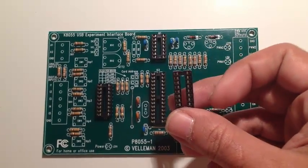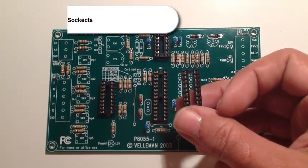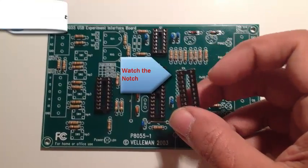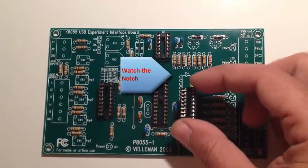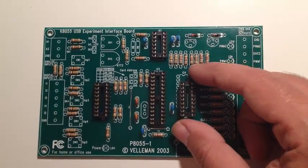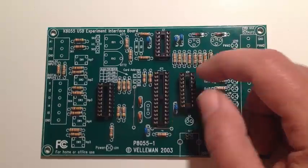Step 5, installing the integrated circuit sockets. Remember to watch the notch on these. They'll tell you where pin 1 is, and on the board it shows how the notch goes. So obviously we'll put this one in like this because the notch is up here.